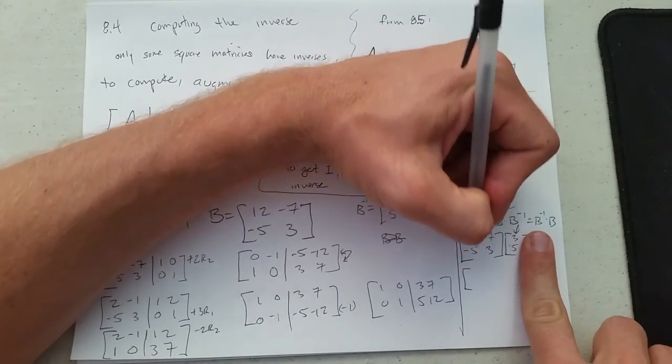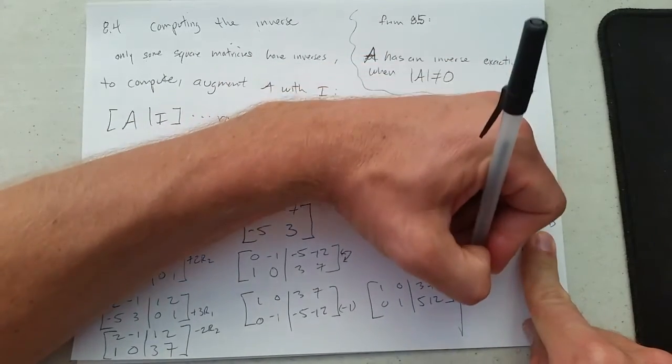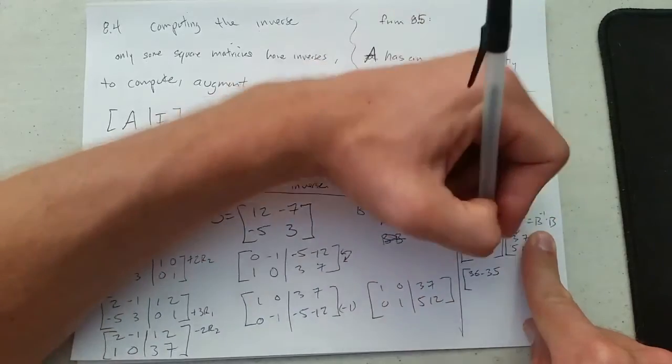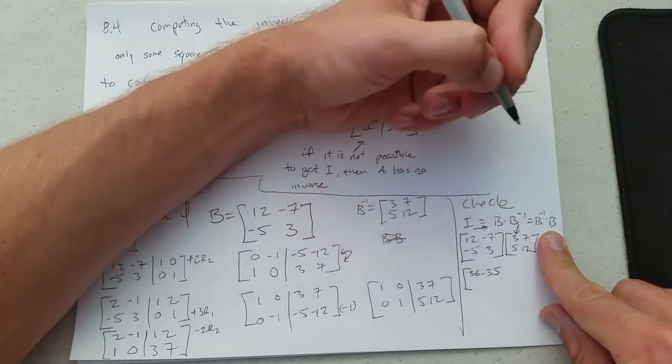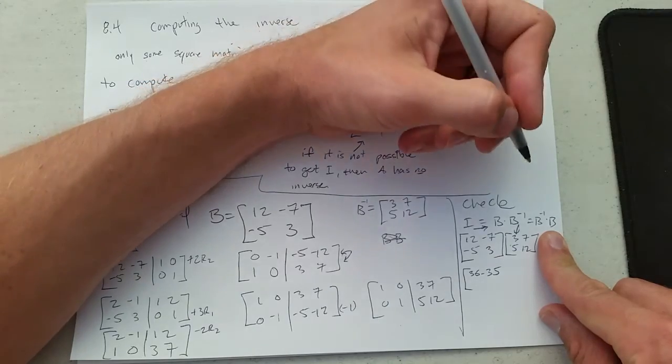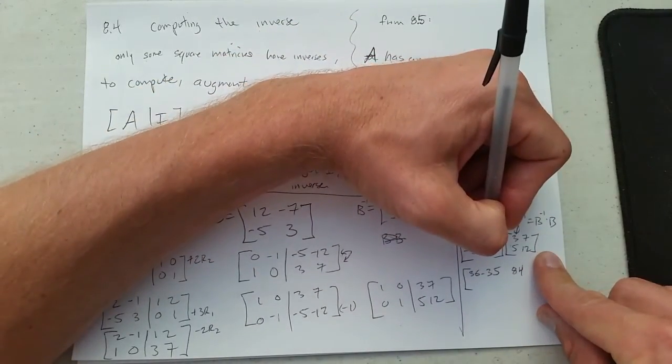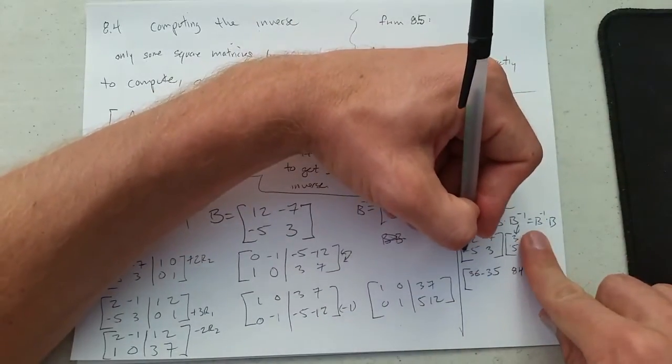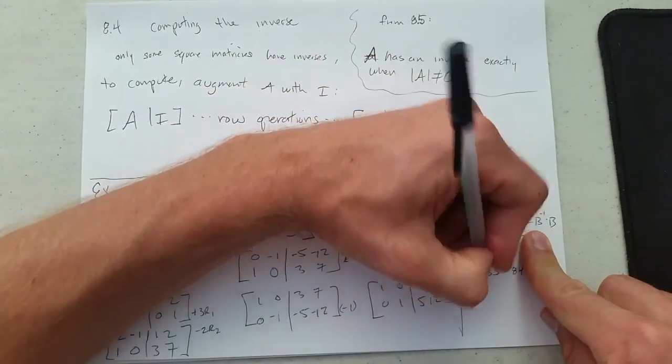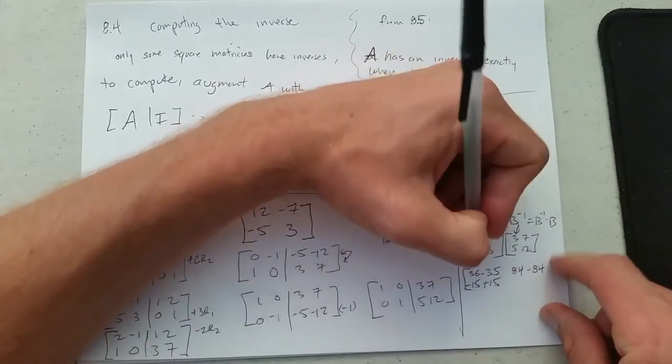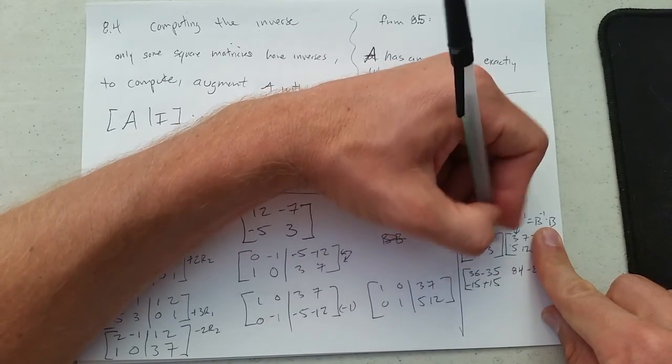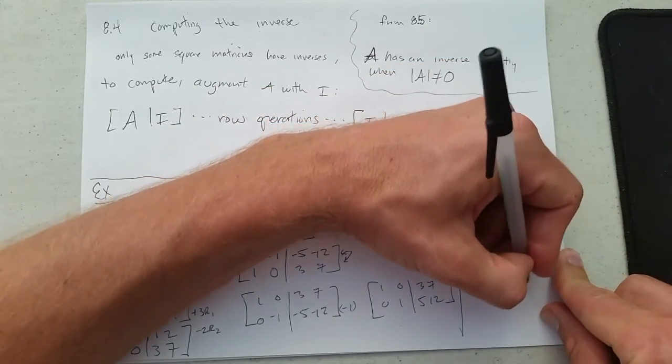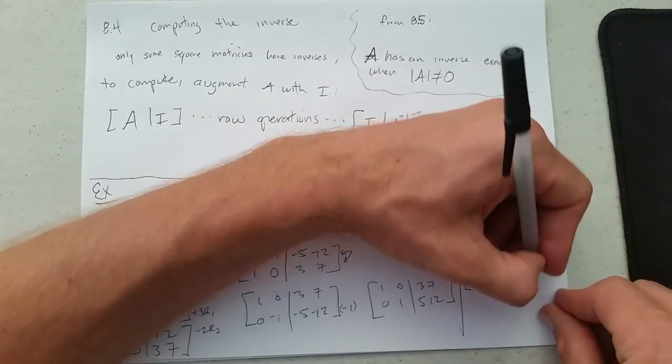12 times 7 is 84. 7 times negative 12, ah, negative 84. Sounds good. Negative 5 times 3 is negative 15. 3 times 5, positive 15. And last up, 7 times negative 5 is negative 35, and 3 times 12 is 36.